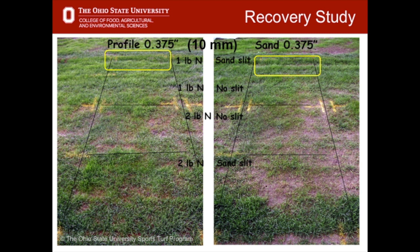This picture shows that the two best treatments, highlighted in yellow, that retained the most ground cover during traffic conditions were those that had been both top dressed and slit with sand or calcine clay.